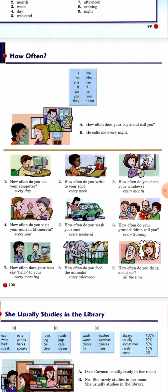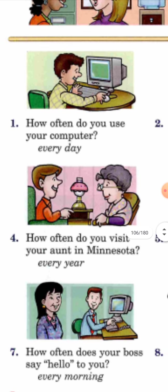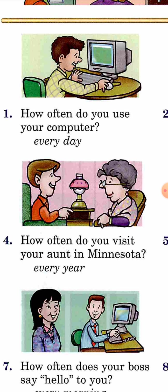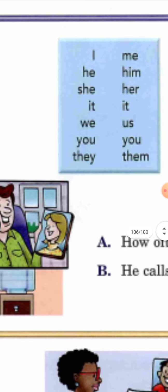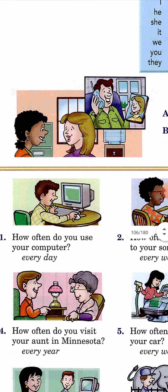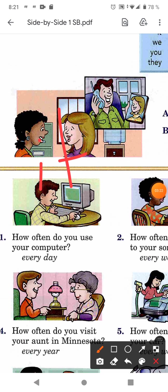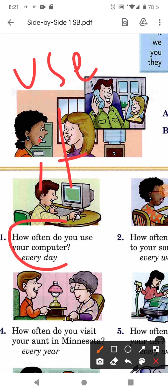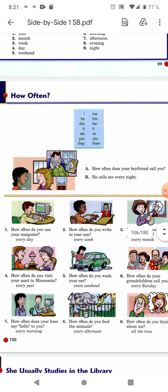You need to find the verb and specify what is the object of the action. For example: 'how often do you use your computer?' The verb is 'use,' the thing being used is the computer, so it becomes 'it' placed after the verb: 'I use it every day.' Please send a video of your screen completing these nine repetitions.